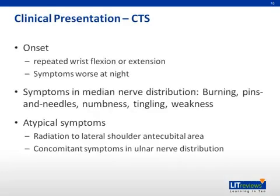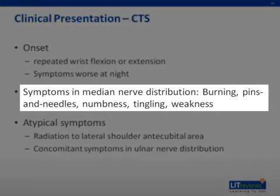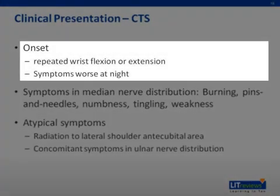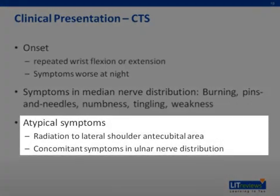When CTS typically presents, patients note the onset of a burning, pins-and-needle sensation in the distal distribution of the median nerve that occurs with flexion or extension of the hand. This is often accompanied by numbness, tingling, and decreased grip strength, with symptoms that are frequently worse at night. Less frequently, patients will describe these symptoms as radiating to the ipsilateral shoulder or antecubital fossa. And some patients report symptoms that extend into the ulnar nerve distribution.